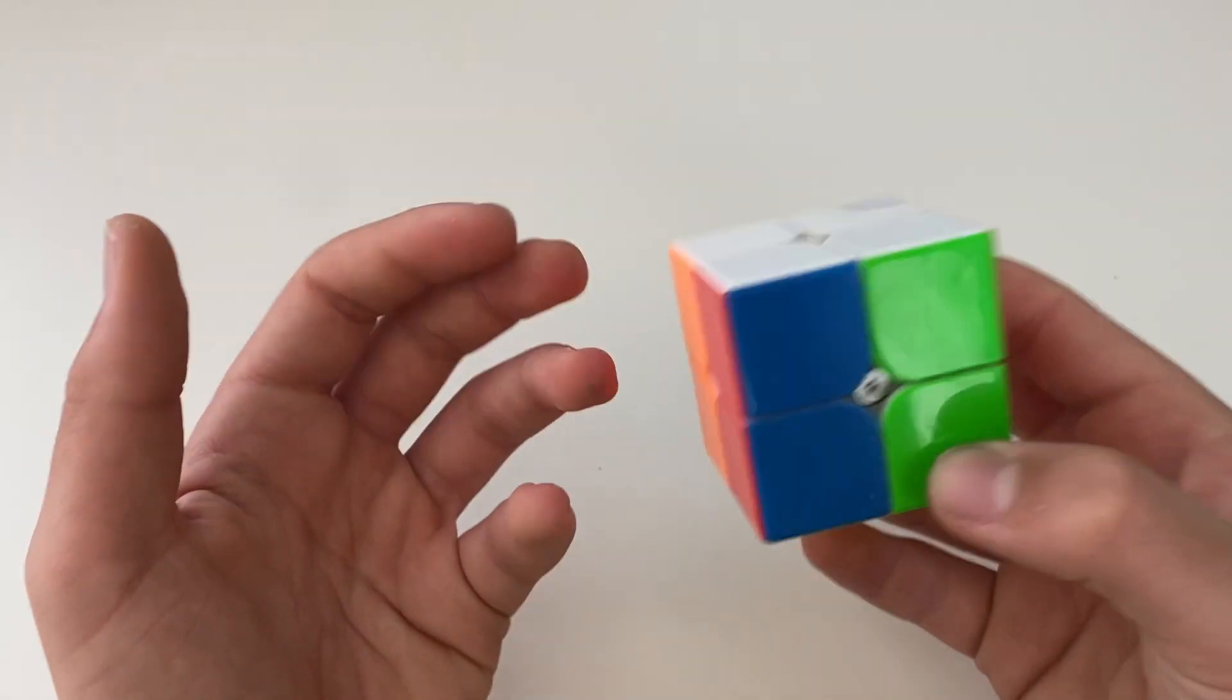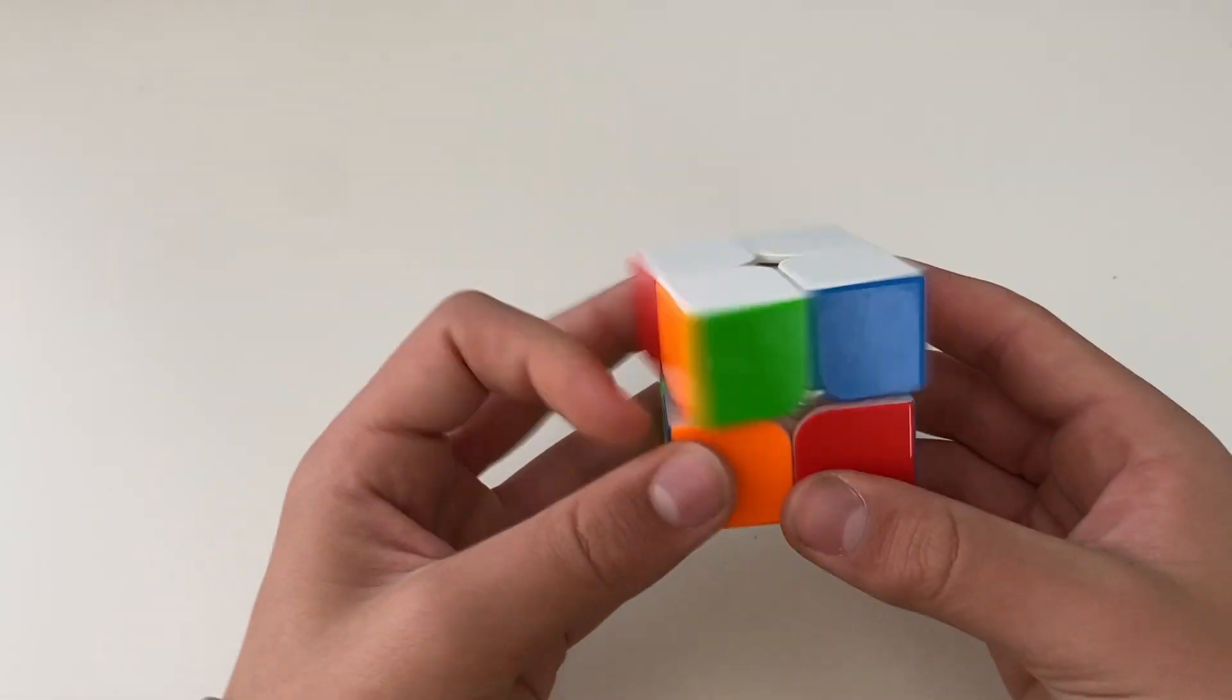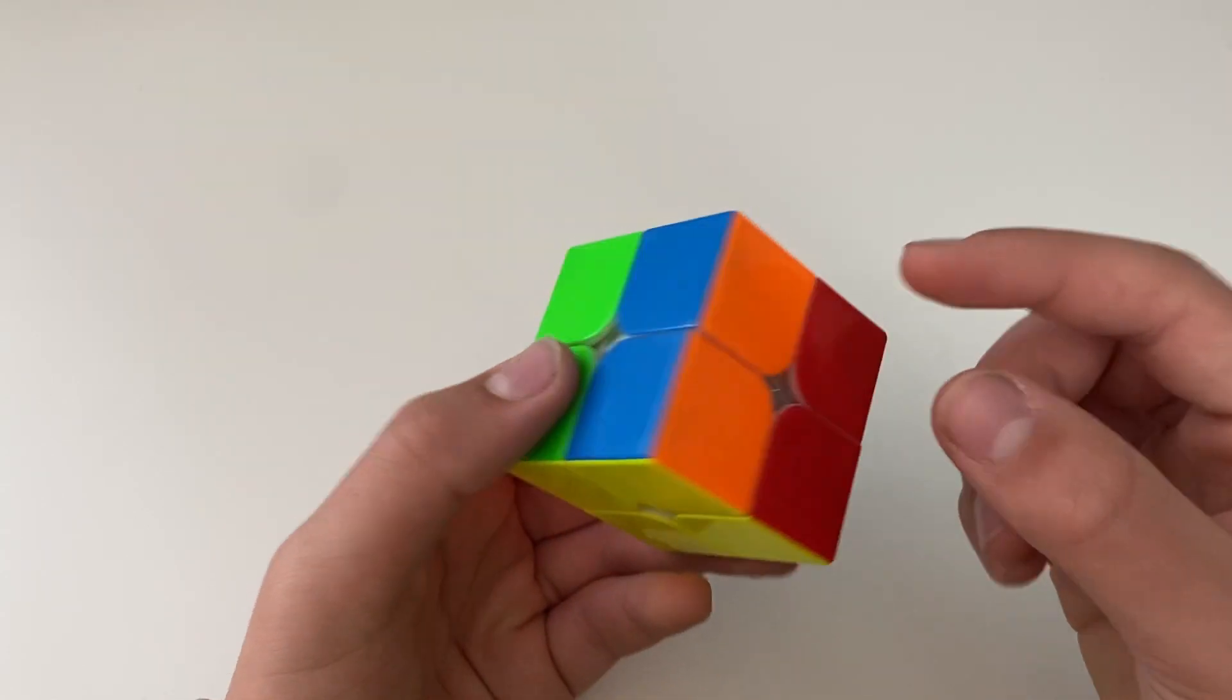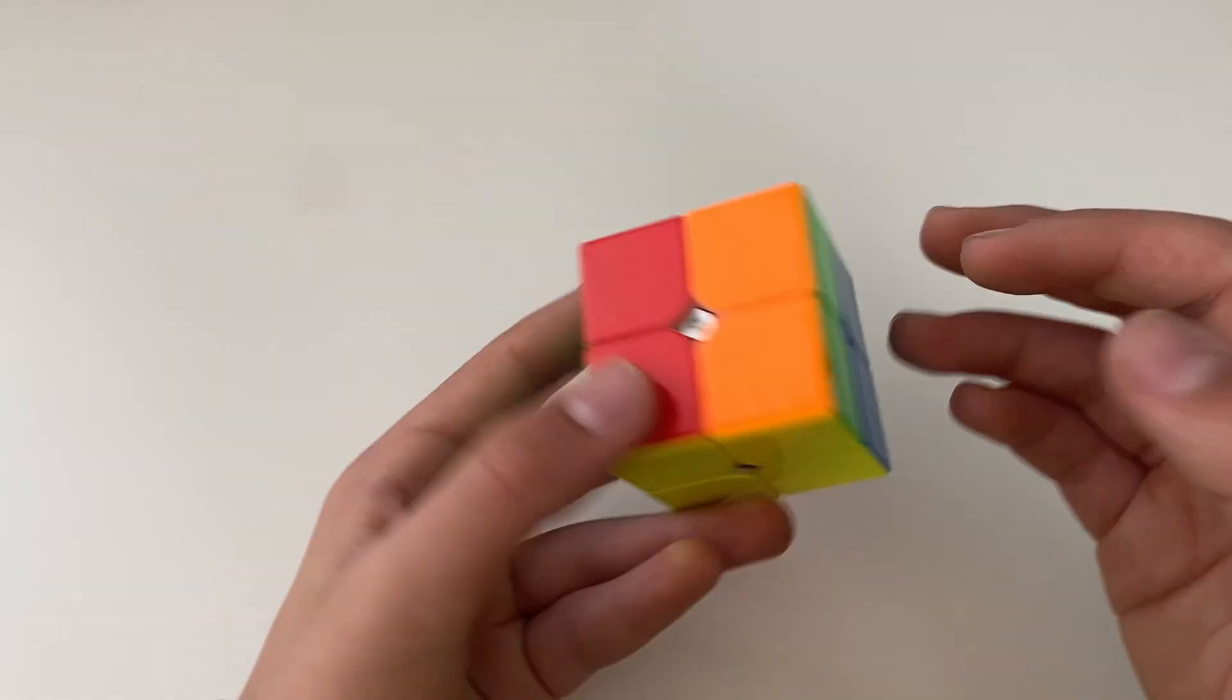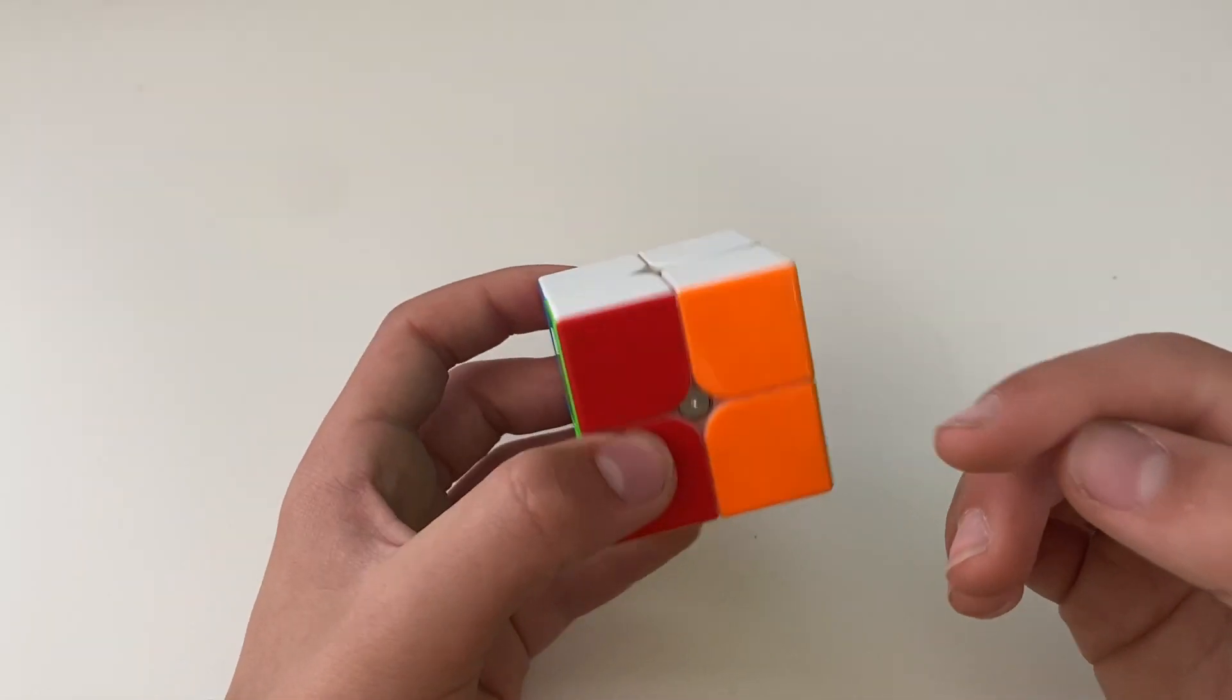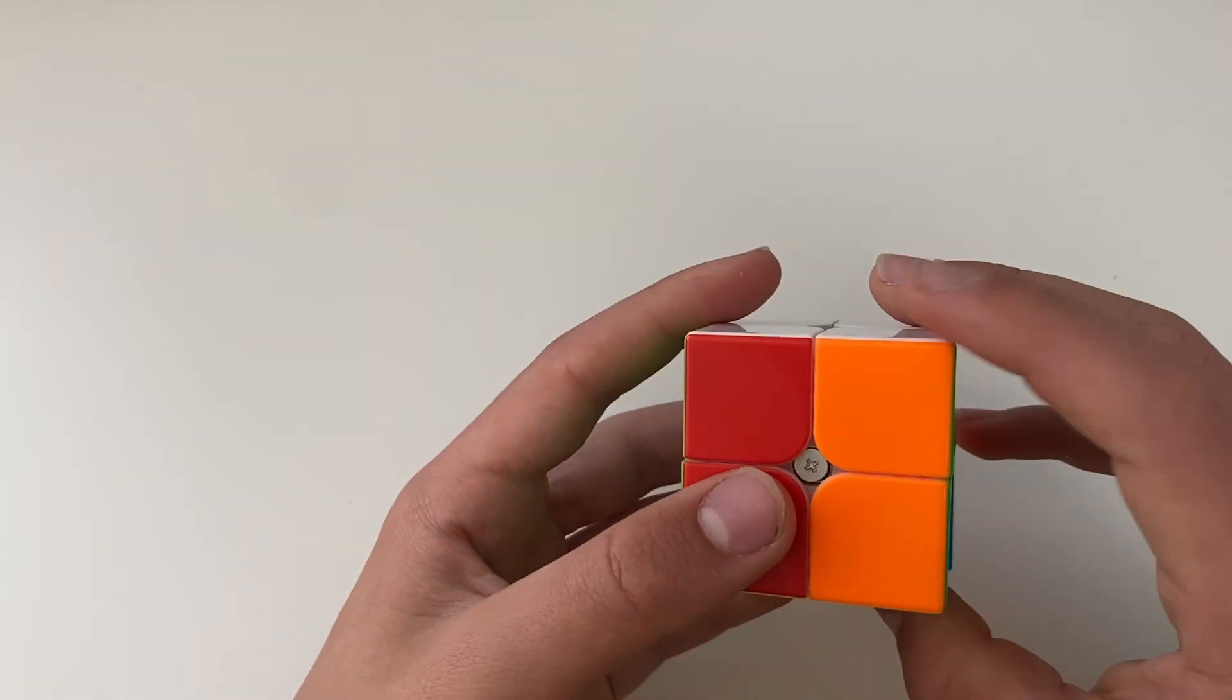The next case is when you have something that sort of looks like this. So it's kind of like a beach ball pattern. It kind of looks like this right here. So we have no bars on either the top or bottom. So there are a few ways to do this algorithm, so I'm going to show you a pretty easy one.